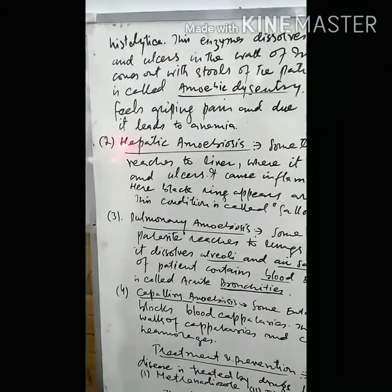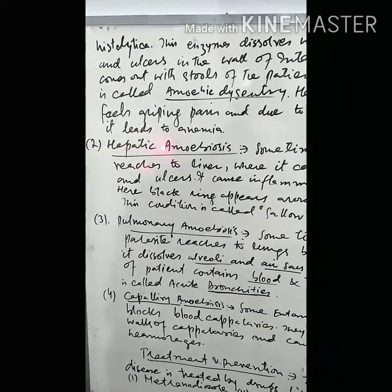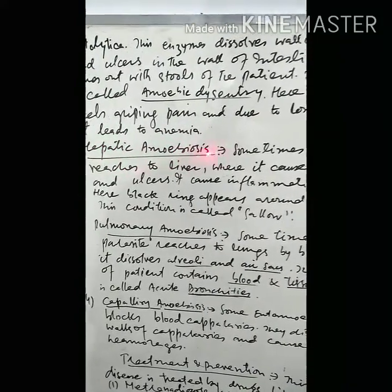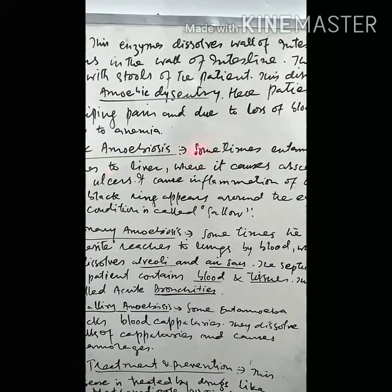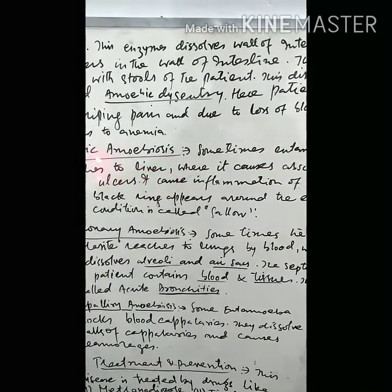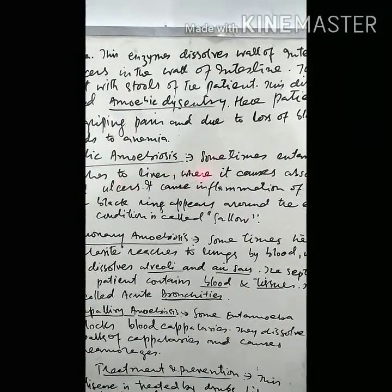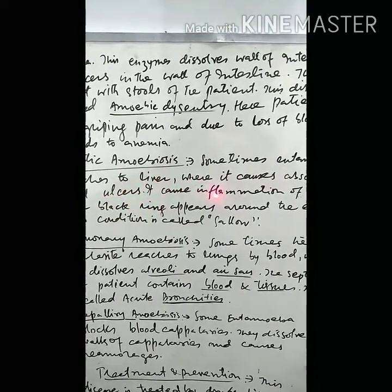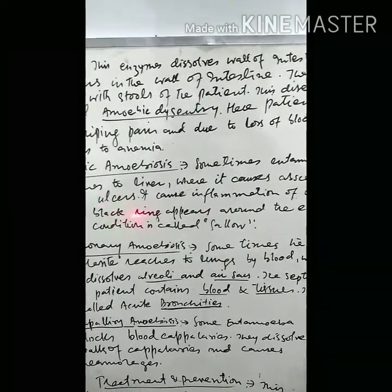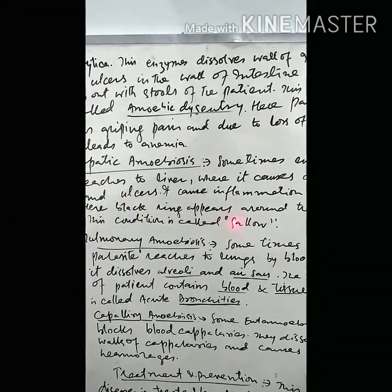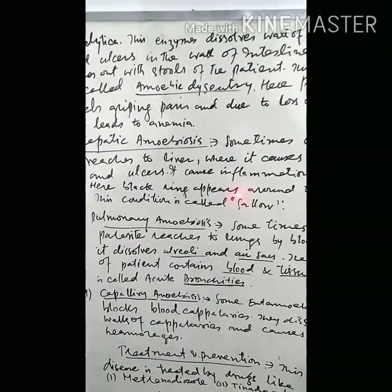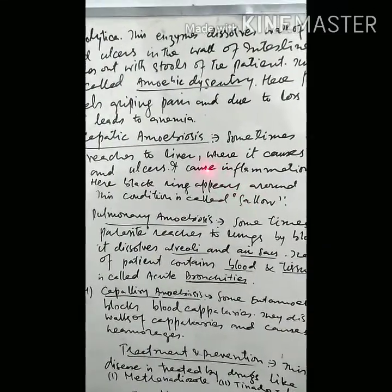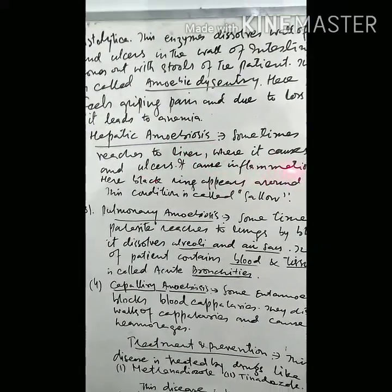The next disease caused by Entamoeba histolytica is hepatic amoebiasis. Sometimes this pathogen reaches the liver, where it causes abscess and ulcers. It causes abscess and inflammation of the liver, and black rings appear around the eyes. Sometimes rupture of the liver also takes place.